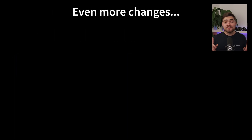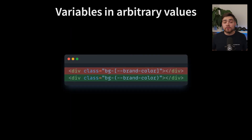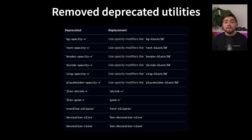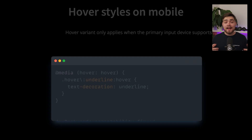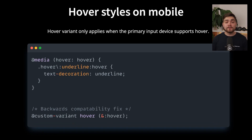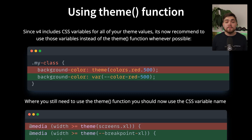There are just a few more changes from v3 to look out for. Utilities like shadow, ring, and backdrop have been renamed to be more consistent and predictable. The variable syntax has changed from square brackets to parentheses to remove ambiguity. Deprecated utilities have been removed entirely. Stacked variants now go left to right instead of right to left, matching CSS syntax. The hover variant now only applies when the primary input device supports hover — this may affect mobile tap behavior, but you can restore the old behavior with CSS. You can also no longer disable core plugins, and they recommend using the CSS variable function over the theme function. Where variables aren't supported, like in media queries, use the CSS variable name instead of the old dot notation.